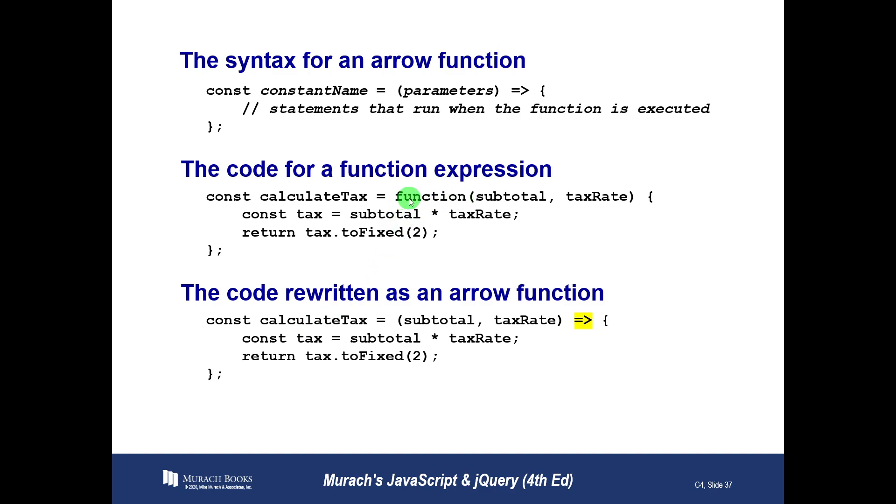We can rewrite this as an arrow function by doing this. We take the function out, the word function. So constant calculate tax, that's the same in both of these, equals, the assignment operator is the same. We take the function out, we still provide the parameters subtotal, comma, tax rate, and then we put in the arrow, followed by the code block. That's exactly the same as the code was when we did it as a function expression, and that's an arrow function.